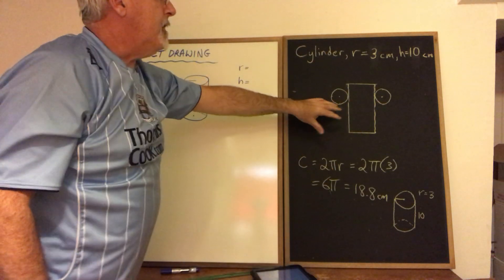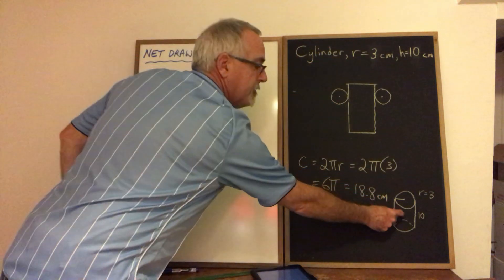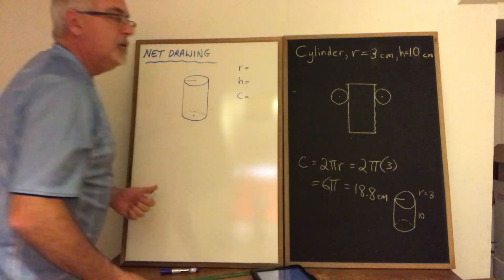Now I have finished. I have drawn my net drawing of this cylinder. And this is what this 3D shape looks like when it is unrolled to be two-dimensional.